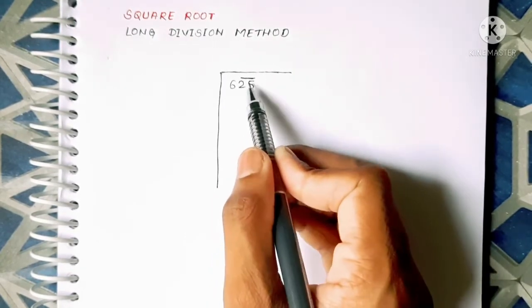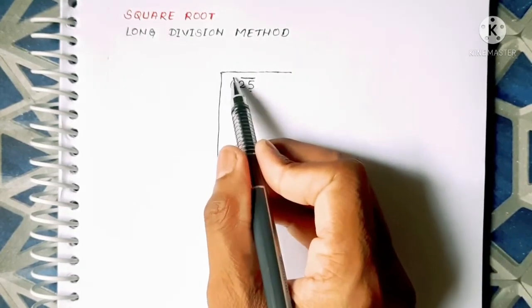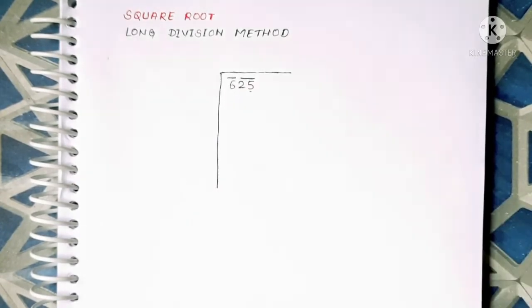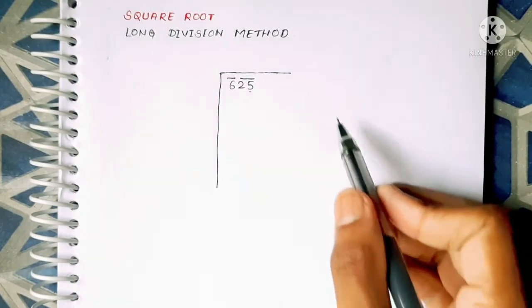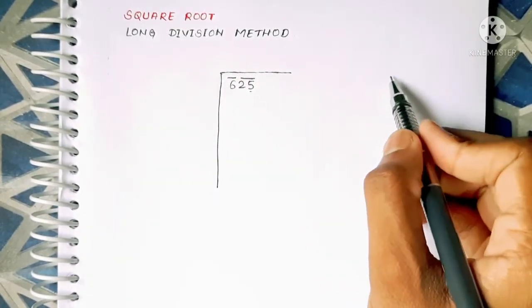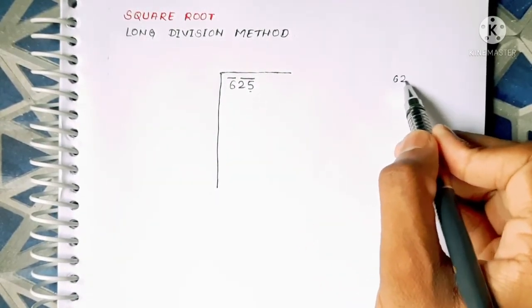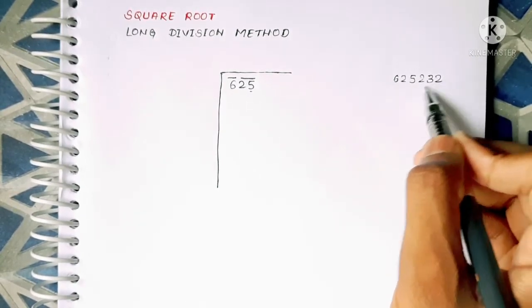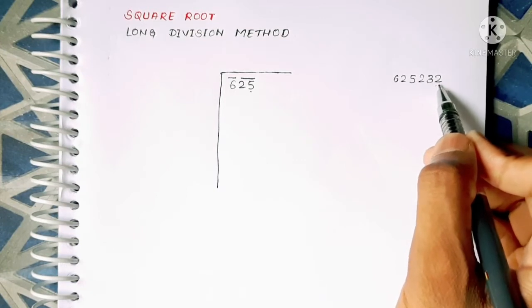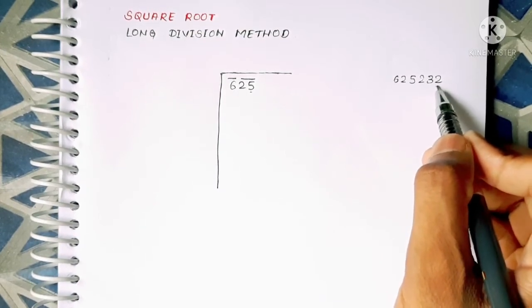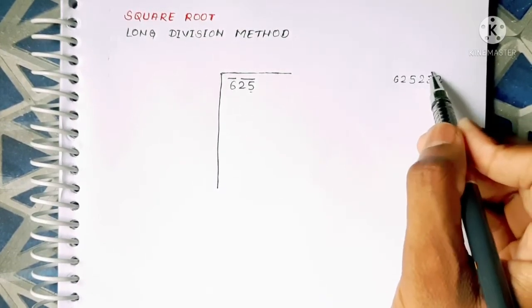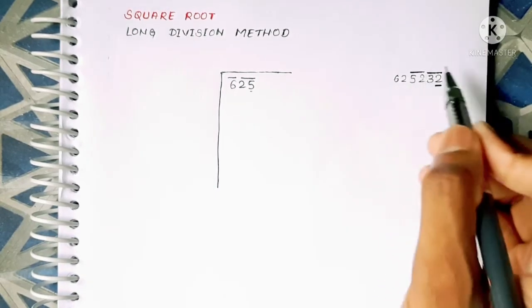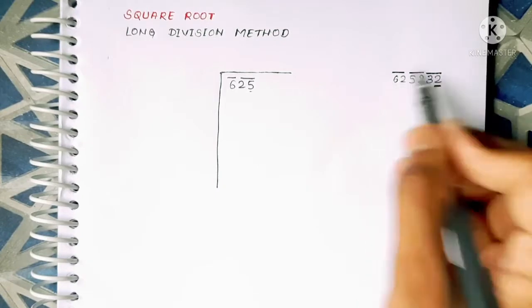Like 25 is first pair and here it is 6, so we can say that it is the second number. Like if there is another number as 625232, then we will have to take the bars from the left ones digit like we will put pair one 32 and another 52 and third 62.